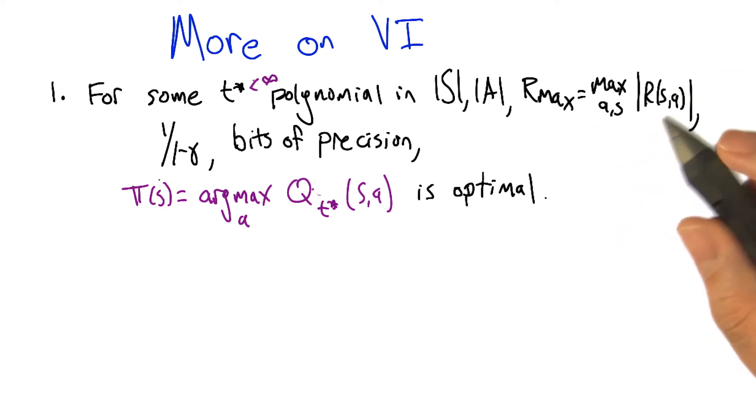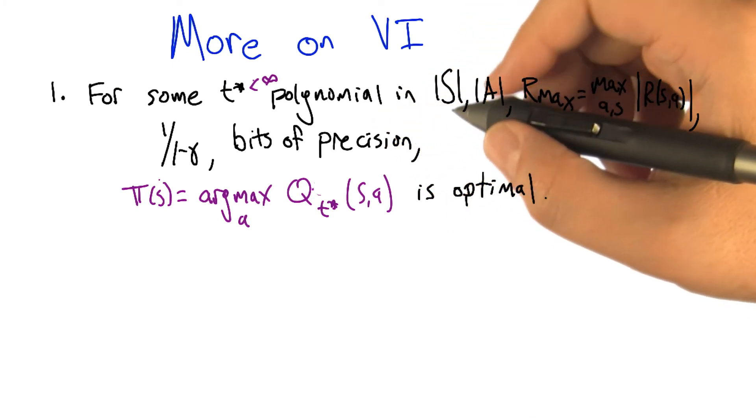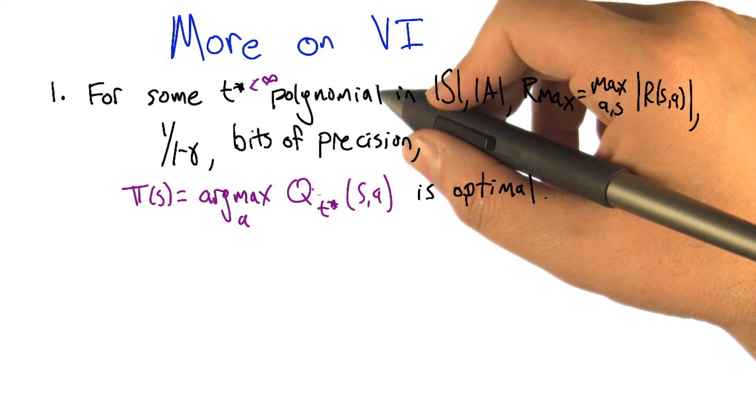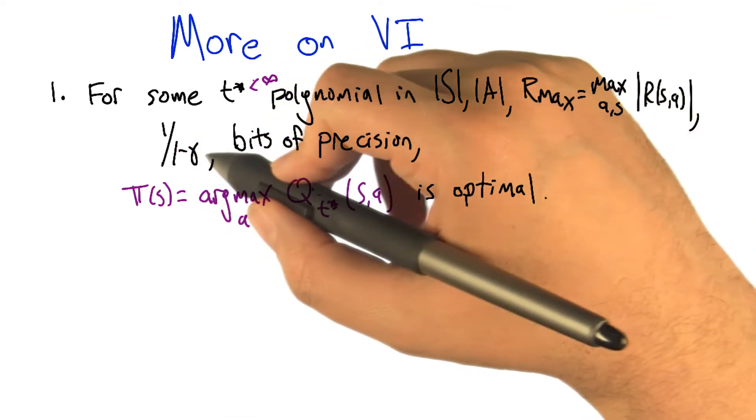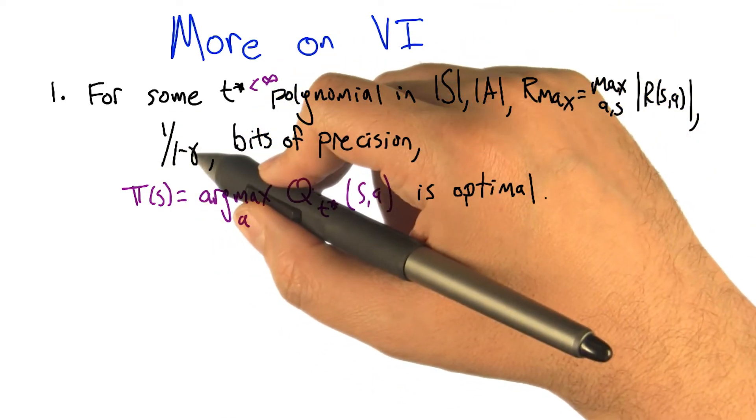Anytime I see the word polynomial, I'm like, okay, this is reasonable. Now the trick in this particular thing, the reason it's not just polynomial, is this 1/(1-γ). As gamma gets close to one, this blows up.